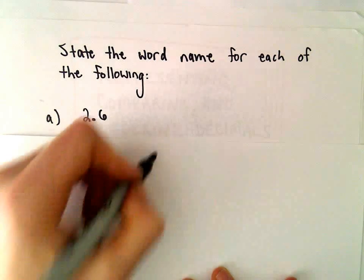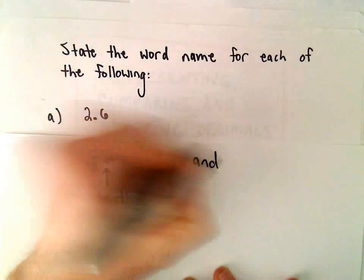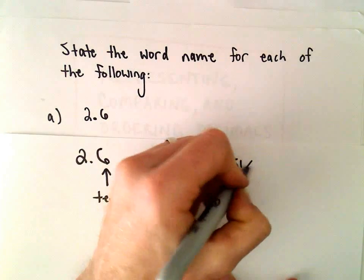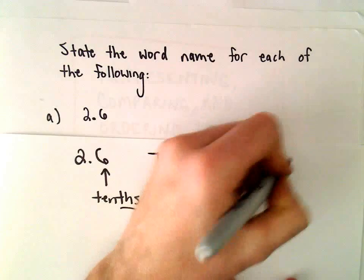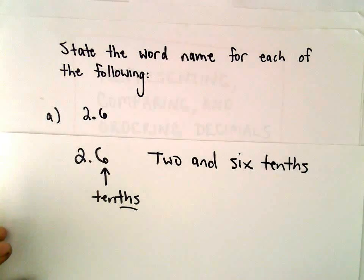So the way we would write this number is we would say it's two and six tenths. So we would say two and six tenths. That's how you could write that number.